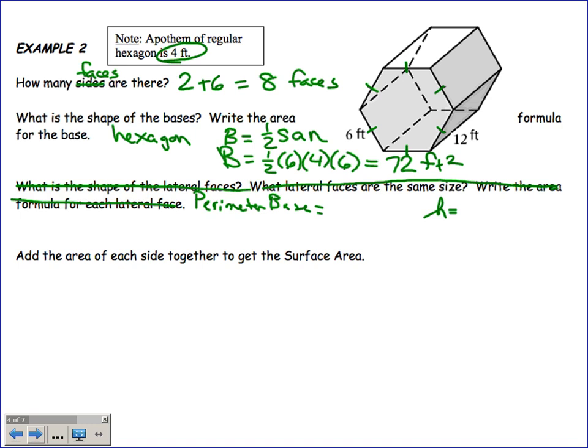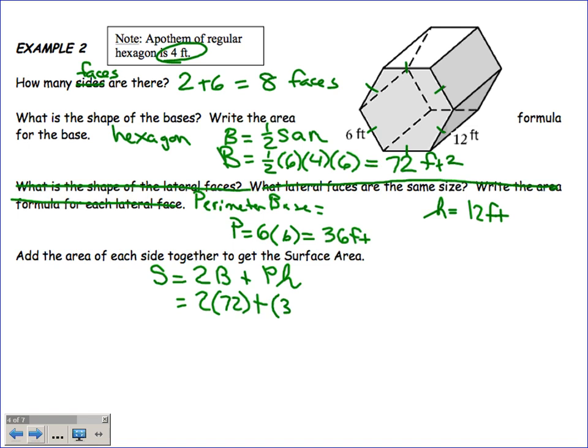The perimeter of the base: six sides times six feet each equals 36 feet. The height between the two hexagons is 12 feet. So: S = 2B + PH = 2(72) + 36(12) = 144 + 432 = 576 square feet.